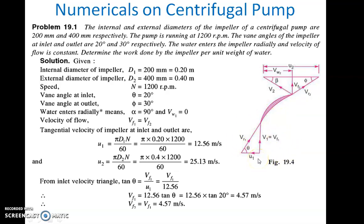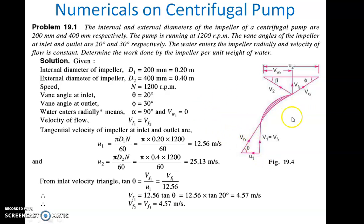In the Francis turbine case Vw2 was zero; in the centrifugal pump case Vw1 is zero. Here alpha is 90 degrees, that is why Vw1 is zero. To get maximum output from the impeller, you get Vw2 U2 upon G as the maximum output. The discharge is radial at inlet. This is the outlet velocity triangle — at inlet alpha equals 90 degrees, so V1 equals Vf1 and Vw1 is zero. The angle made by Vr1 is keta.